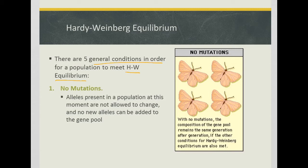The first condition is that there can be no mutations. The alleles present in the population at this moment are not allowed to change, and no new alleles can be added to the gene pool — so no mutations.